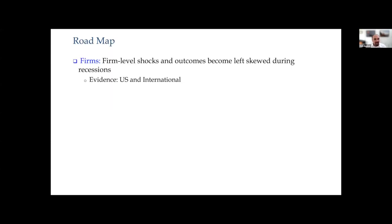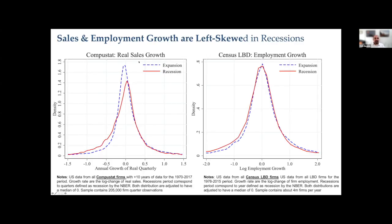Going deeper into firm evidence: the histogram of sales growth shifting left is for Compustat. On the right, from the census LBD, this is employment growth — and you see the same pattern: the left tail expanding, the right tail getting thinner. So it is not only sales but also employment that shows this skewness pattern.